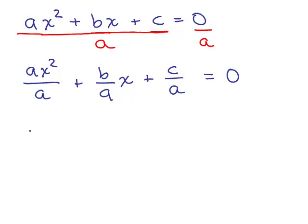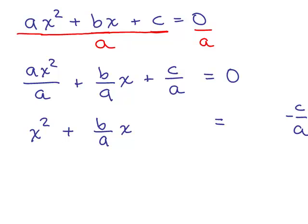This gives us x squared plus b over a times x. Now I'm going to take the constant term, c over a, and subtract it from both sides — so I put it on the other side as negative c over a, leaving a little space. It equals negative c over a.